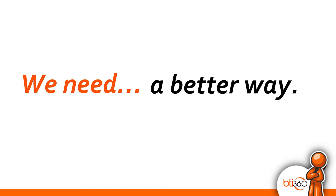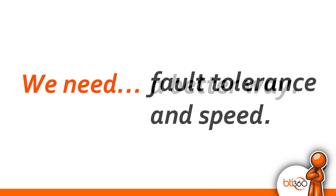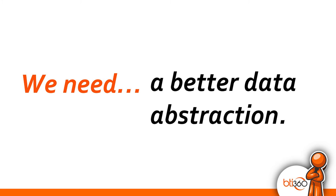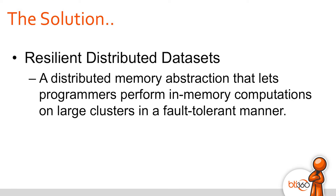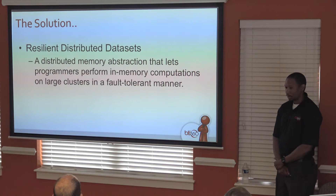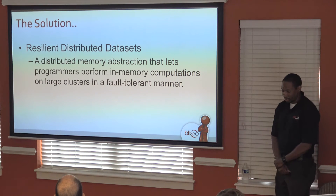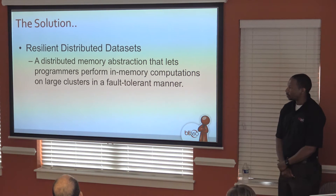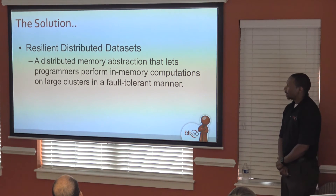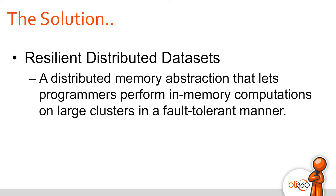We need a better way. MapReduce was a great start, but there has to be something better. We need fault tolerance with speed — in-memory computing that doesn't fail when a node goes down. We need a better data abstraction: how can we get in-memory data sharing that is also fault tolerant? The answer is Resilient Distributed Datasets. This is the underpinning of Spark — a distributed memory abstraction that lets programs perform in-memory computations on large clusters in a fault-tolerant manner.